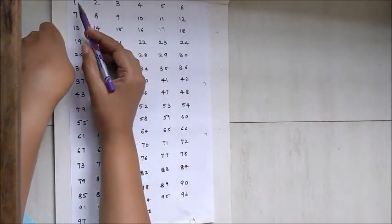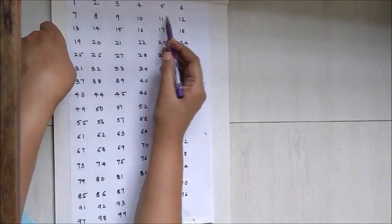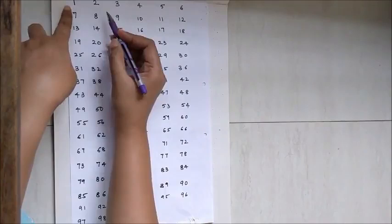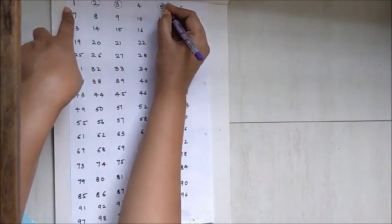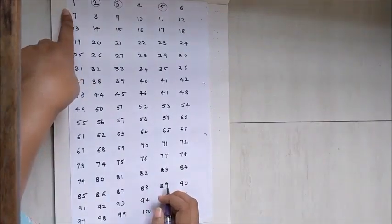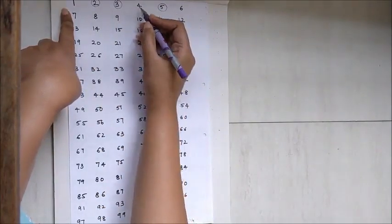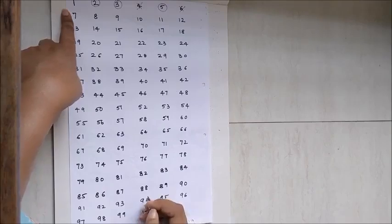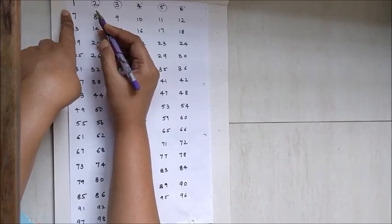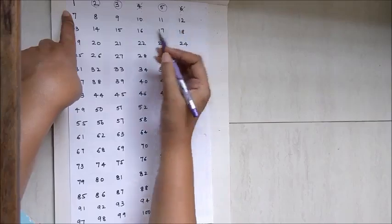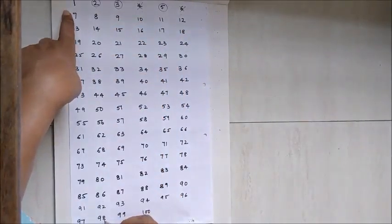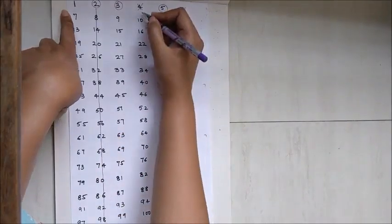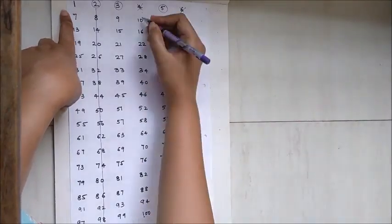We are going to find prime numbers from 1 to 100. I have written all the numbers from 1 to 100, arranged in horizontal rows of six. We know that 2, 3, and 5 are prime numbers, and any number which is a multiple of 2 will not be a prime number. So we can say 4 and 6 won't be prime numbers. We are going to cancel out all the multiples of 2 — this entire column contains multiples of 2, so I'm striking it out. Similarly, the next column of multiples of 2 is also struck out.